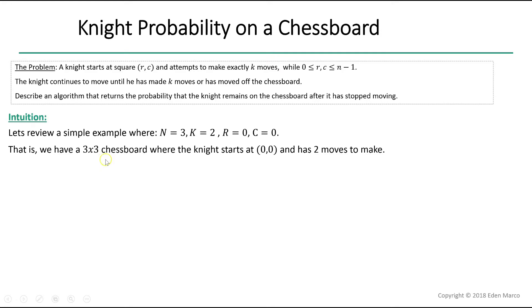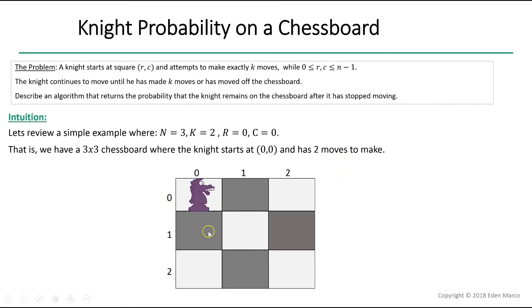That is, we have a 3 by 3 chessboard where the knight starts at location 0, 0 and has two moves to make. Here is our 3 by 3 board and here is our knight located at indexes 0, 0.